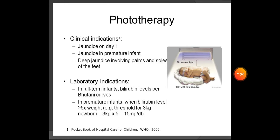In premature infants, phototherapy is indicated when bilirubin levels are greater than or equal to five times the weight in kilograms. For example, the threshold for a 3 kg newborn is 3 × 5 = 15 mg/dL. If the newborn weighs 2 kg, then 2 × 5 gives a threshold of 10 mg/dL.